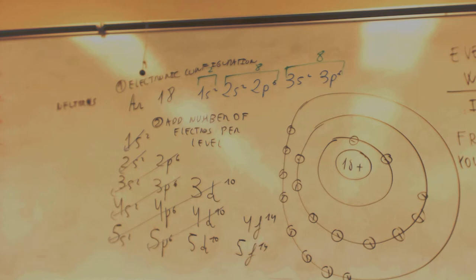To get the number of neutrons, you got two numbers. They're on the periodic table. Here you have the atomic number. And here you have the atomic mass.